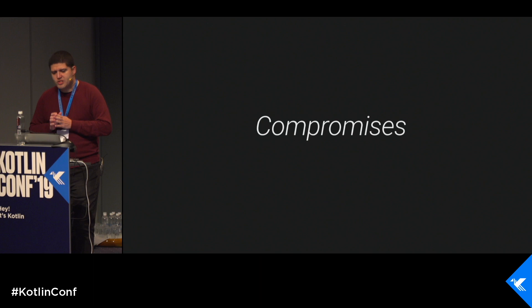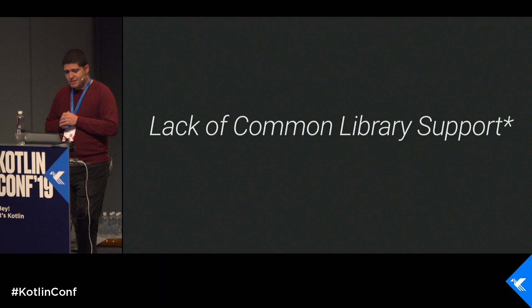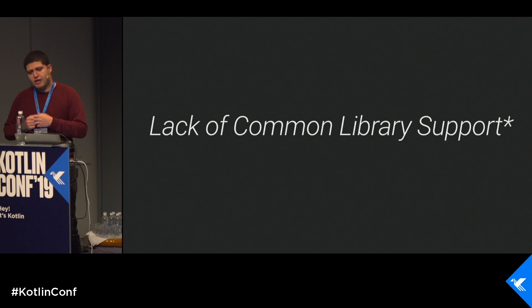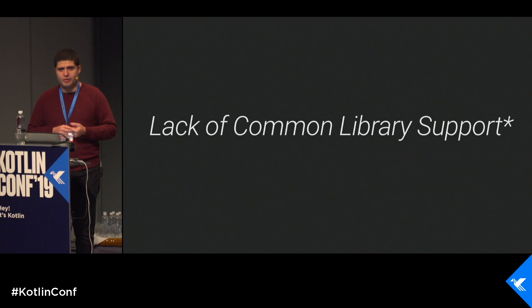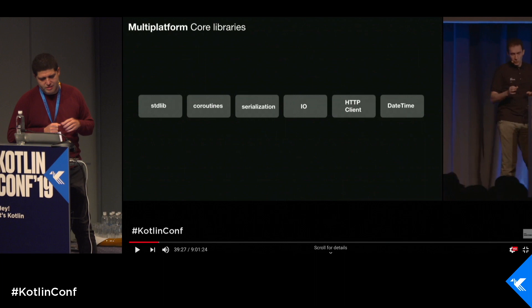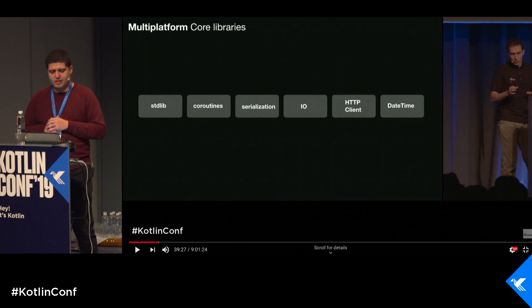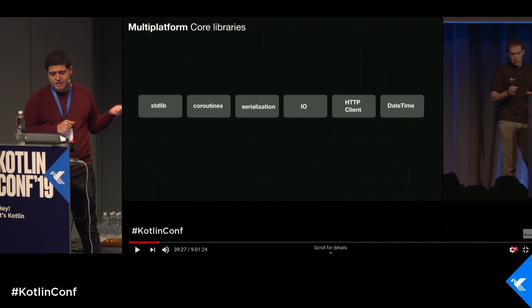Let's talk about some compromises you'll have to make. Lack of common library support — if you tried multi-platform a year or more ago coming from Java, you realize we've been spoiled: gzip encoders, file operations, networking APIs, UTF-8 encoders — things you never thought you needed. But JetBrains has been doubling down over the last year. The coroutines library, serialization, and the datetime library are huge value adds. If your requirement hasn't been satisfied, you'll either have to decouple it or write it yourself.